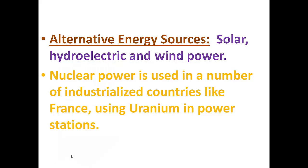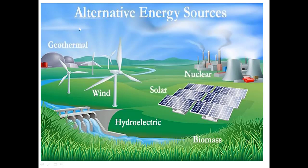Alternative energy sources include solar, hydroelectric, and wind power. Nuclear power is used in a number of industrialized countries like France, where uranium is used in power stations. Uranium is a nuclear element. Other alternative energy sources shown here include geothermal, wind, hydroelectric, solar, nuclear, and biomass.